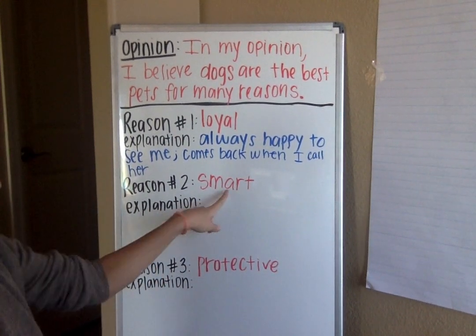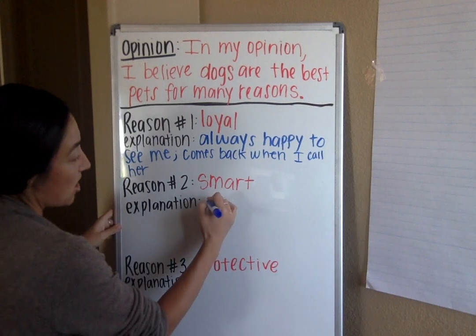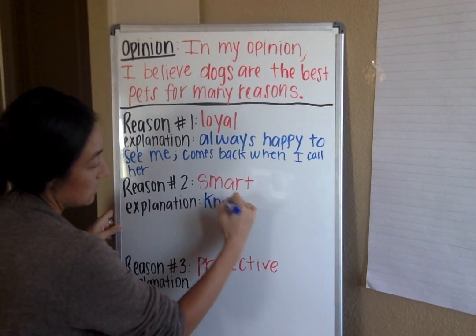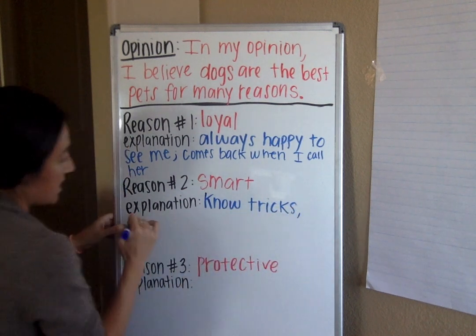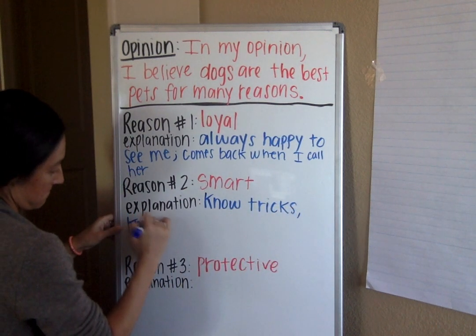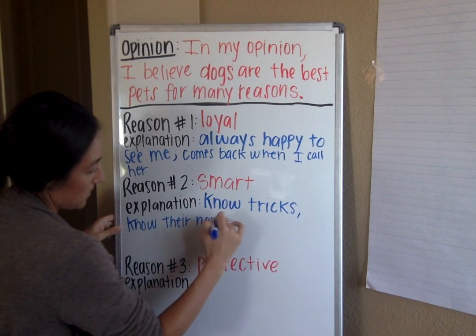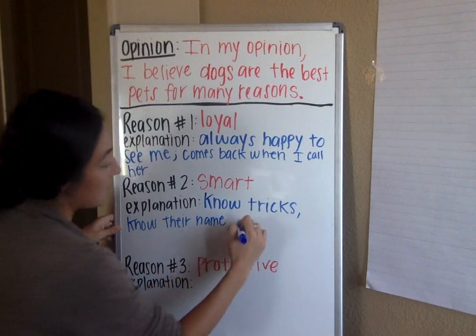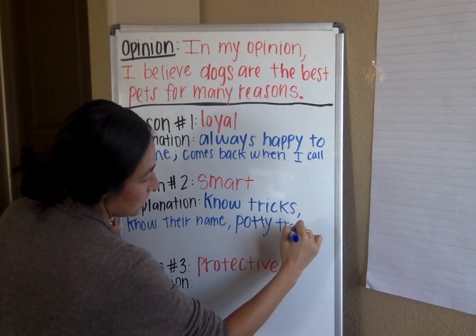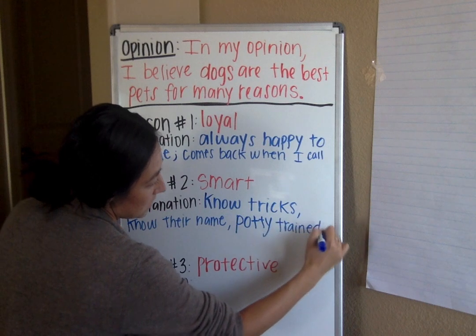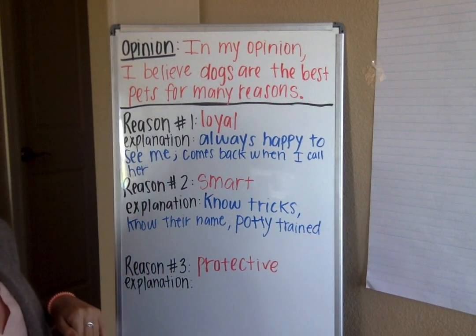Moving on to 'Smart' — why are dogs smart? Many dogs know tricks. Many know their name. And they can be potty trained. You can keep going with more examples, but those are just some that I have come up with.